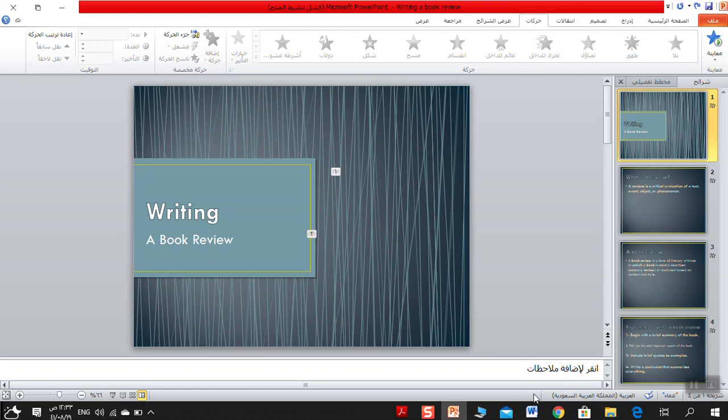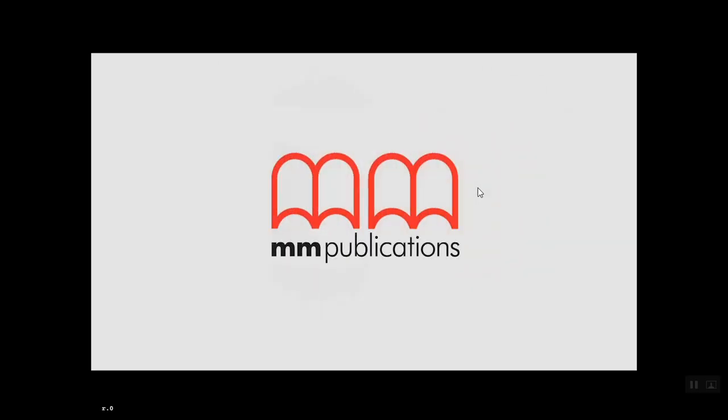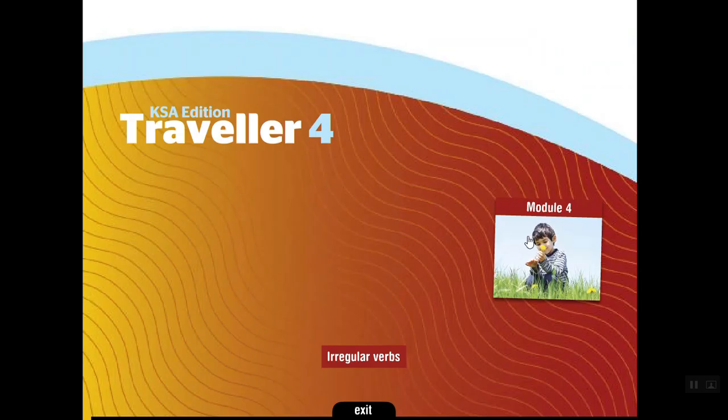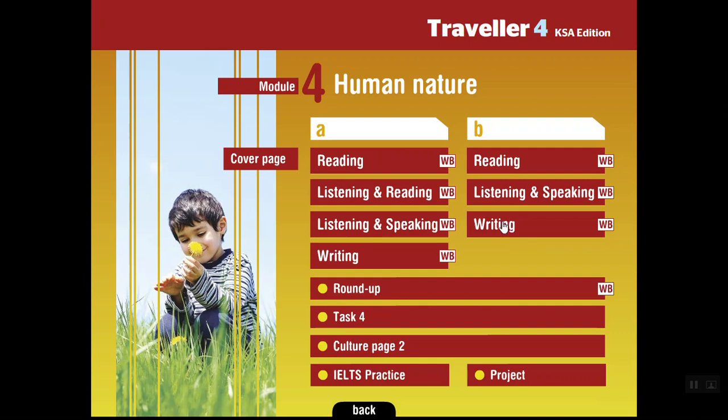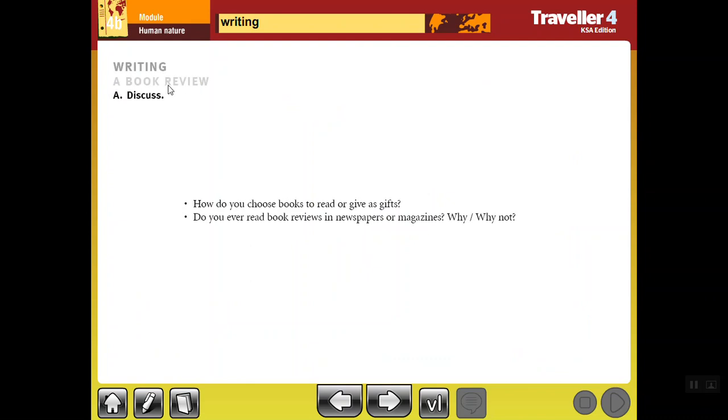So let's move now to your student's book, page 64. Please open your book on page 64. This is Traveler 4, Module 4. And our lesson for today is Writing a book review.